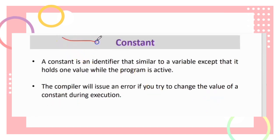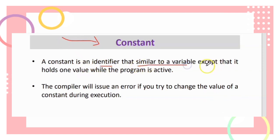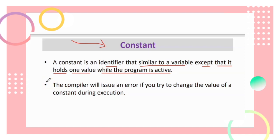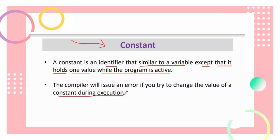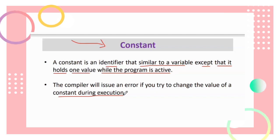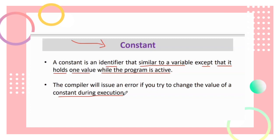Next, we see what a constant is. A constant is an identifier similar to a variable, except that it holds one value while the program is active. The compiler will issue an error if you try to change the value of a constant during execution. Remember: a constant holds only one fixed value throughout the program.